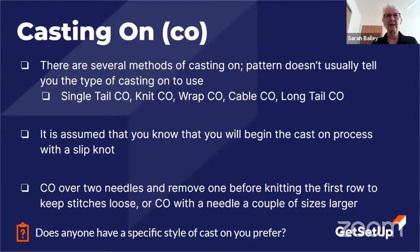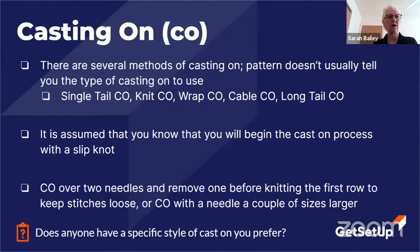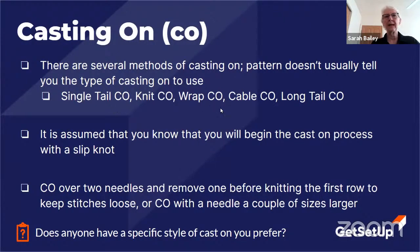Casting on is almost always abbreviated CO. There are several methods of casting on — the pattern doesn't usually tell you which type to use. I use what they call the long tail cast on, which is the method I teach in my Learn to Knit class. I like it because it uses two tails of yarn — the working yarn and the tail — making it more secure, though it's also a little more complicated. For something simpler, I might recommend the single tail cast on, the wrap cast on, or the knit cast on if you already know the knit stitch.